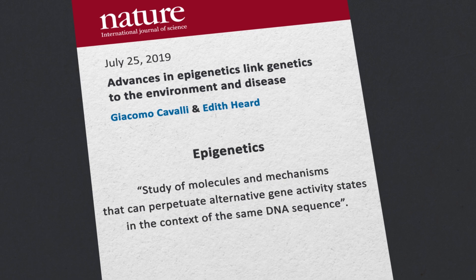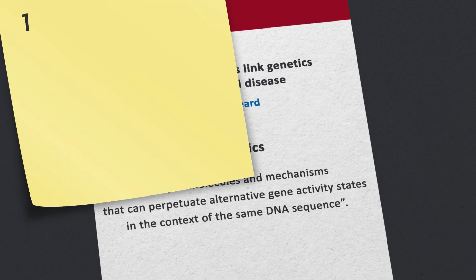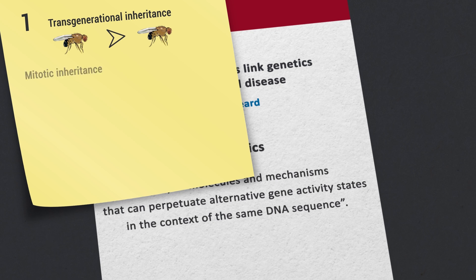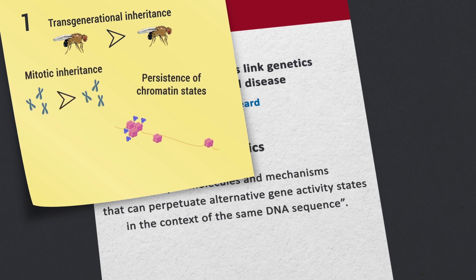This operational definition has several implications. Firstly, it encompasses transgenerational inheritance as well as mitotic inheritance and persistence of chromatin states throughout extended periods of time, even without cell division — for instance in long-lived post-meiotic cells like adult neurons.